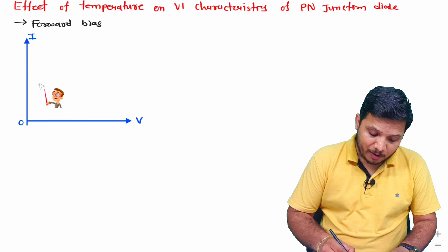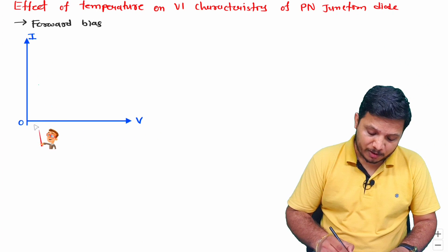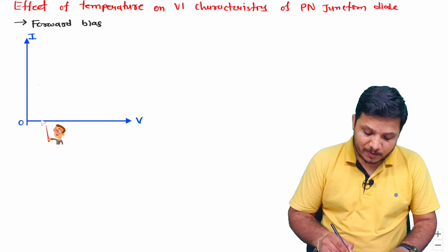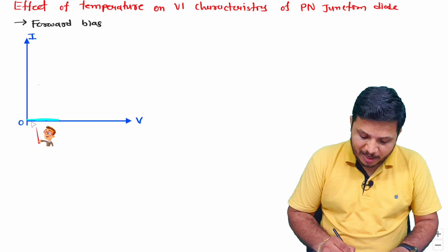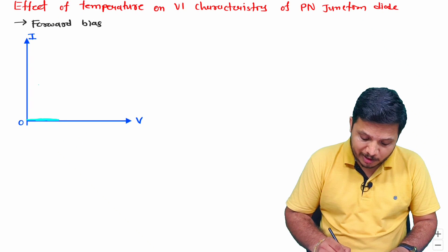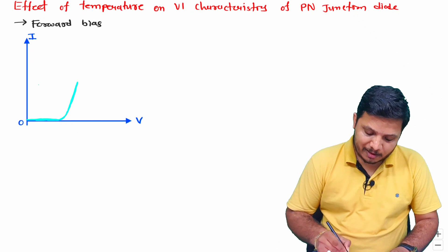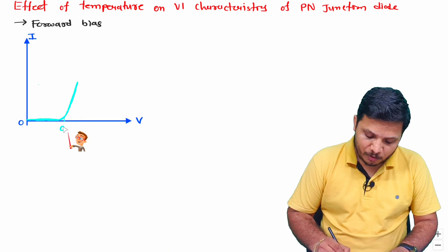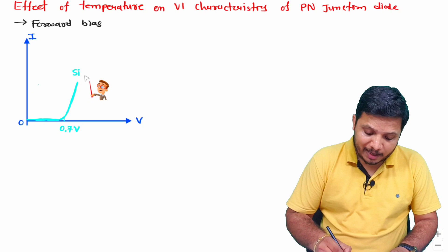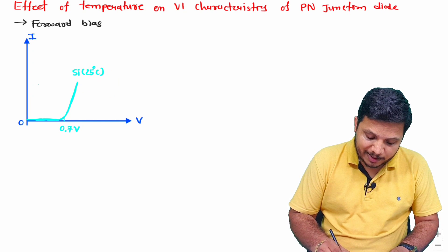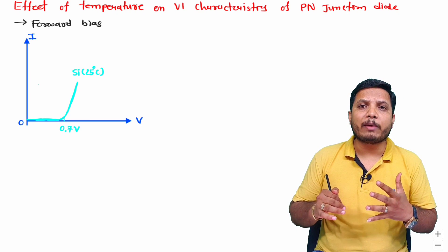When a diode is in forward bias, the characteristic appears in the first quadrant where voltage and current are both positive. Considering a silicon diode, initially as voltage increases from zero, current remains zero. After the threshold voltage is exceeded, diode current increases. This threshold voltage is around 0.7V for silicon, measured at room temperature — typically 25 degrees Celsius, or 27 degrees Celsius in some books.